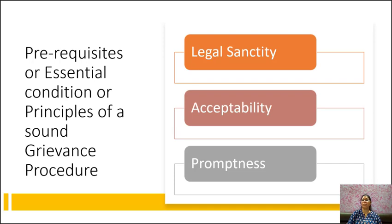An effective grievance procedure should contain the following characteristics. First is legal sanctity. The procedure should be in conformity with the existing law. It should be designed to supplement the statutory provisions. Wherever possible, the procedure should make use of machinery provided under legislation. The procedure may be incorporated in the standing orders or collective bargaining agreement of the organization.